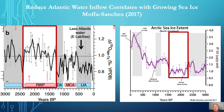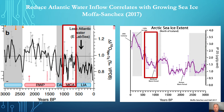Sea ice began to grow with reduced inflows during the following Dark Ages Cold Period. During the Medieval Warm Period, about 1,000 years ago, warm inflows increased again and sea ice declined, but not to the same extent as in the Roman Warm Period. Then during the following Little Ice Age, starting around 700 years ago, inflows became persistently low, and Arctic sea ice reached its greatest extent in over 5,000 years.